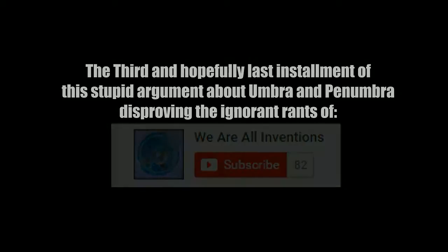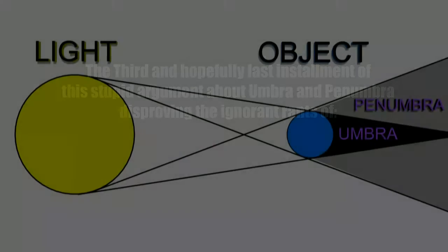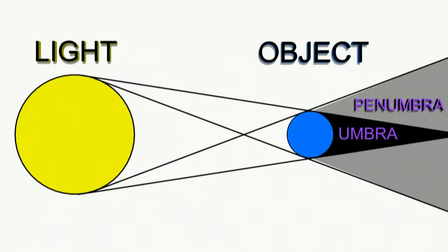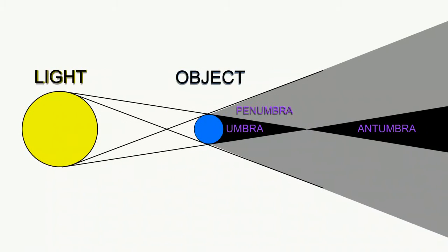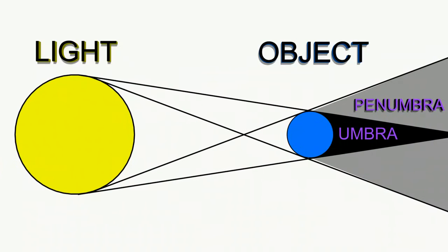Well, while I remain eternally optimistic that you will — pardon the pun — see the light on what it is that umbra, penumbra, and for the advanced classes, antumbra are. Maybe I should have done this the first time and you would have understood a little bit more exactly what that diagram is trying to tell you.